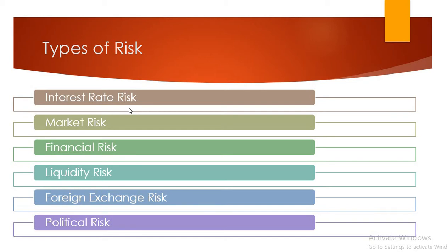Financial risk is about how debt is used in the company — how much of a debt component exists. The higher the debt proportion, the higher the financial risk and financial commitment, because profit or loss depends on how much interest the company has to pay.